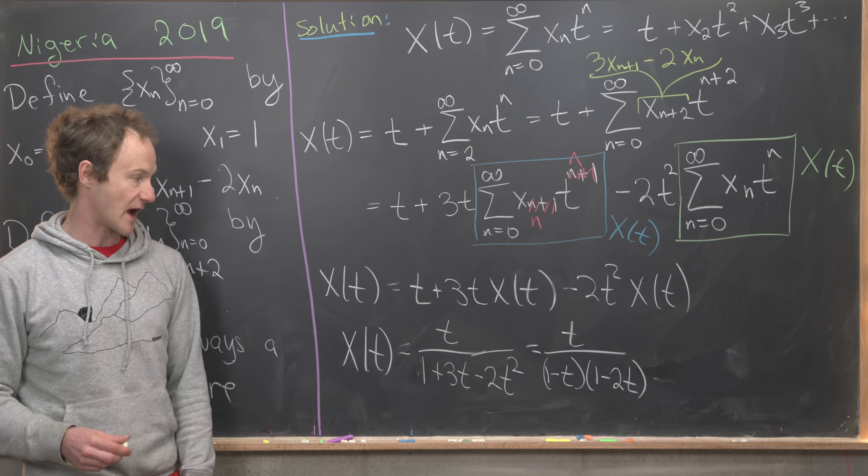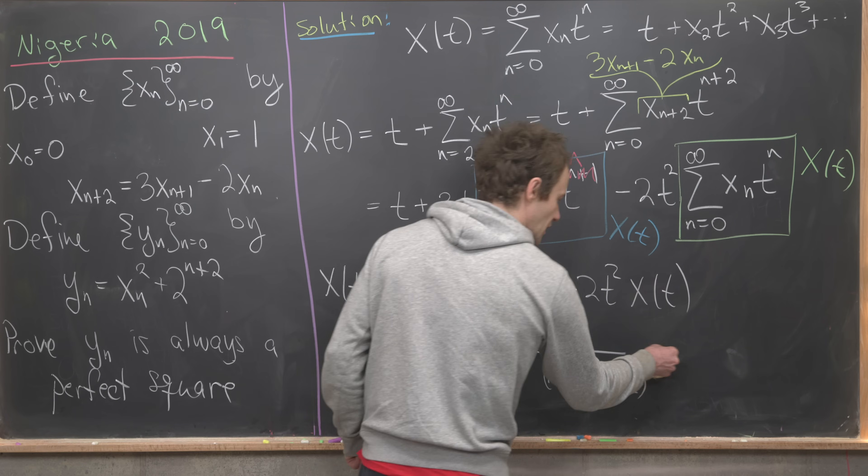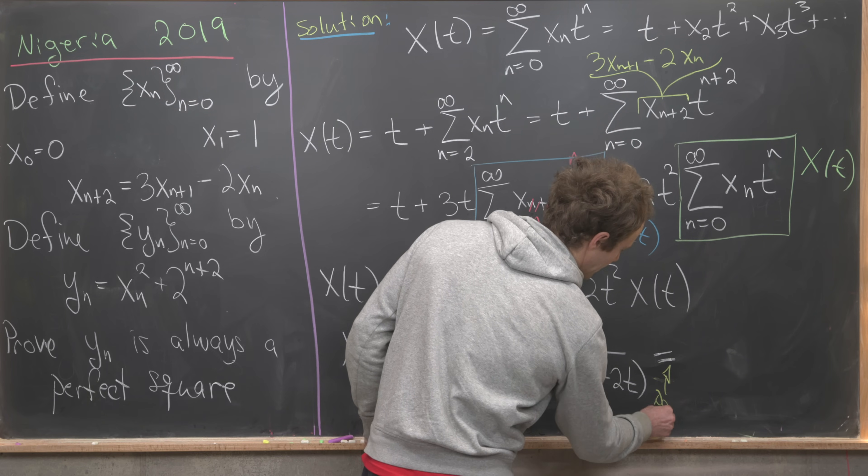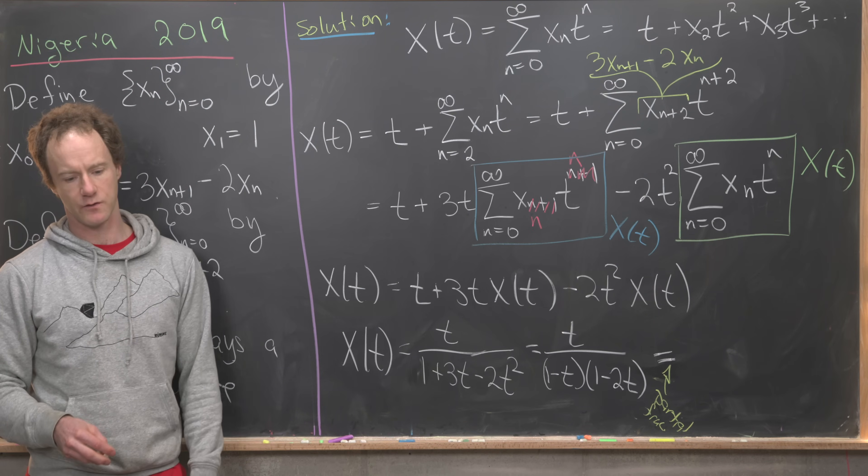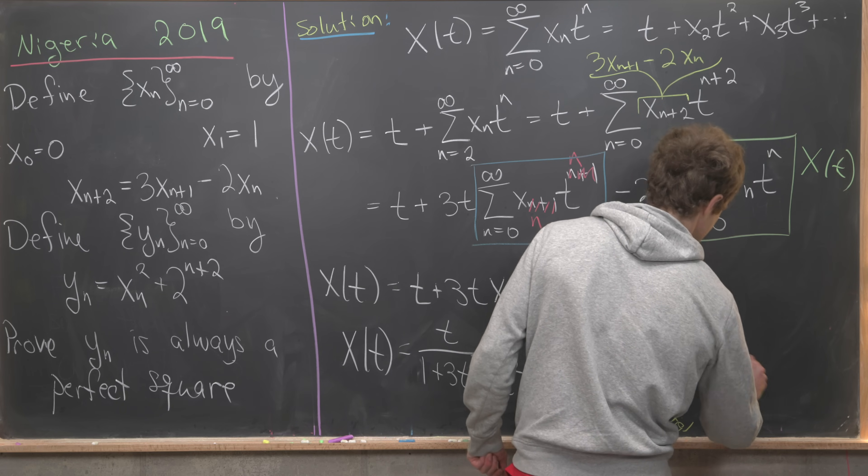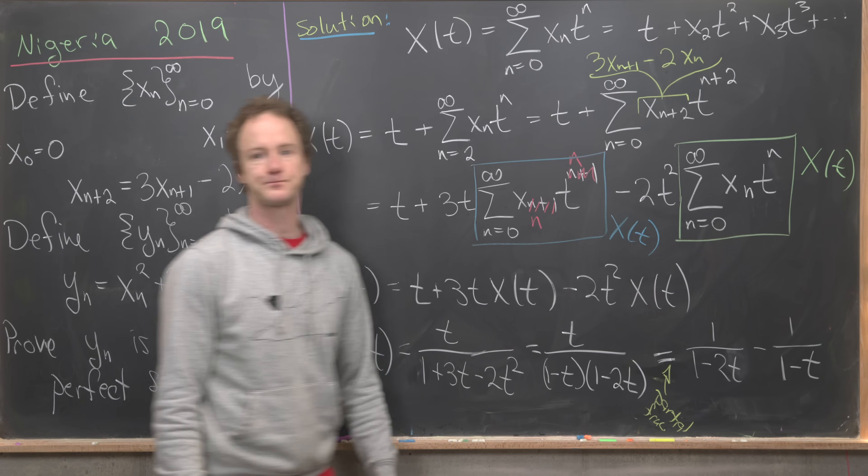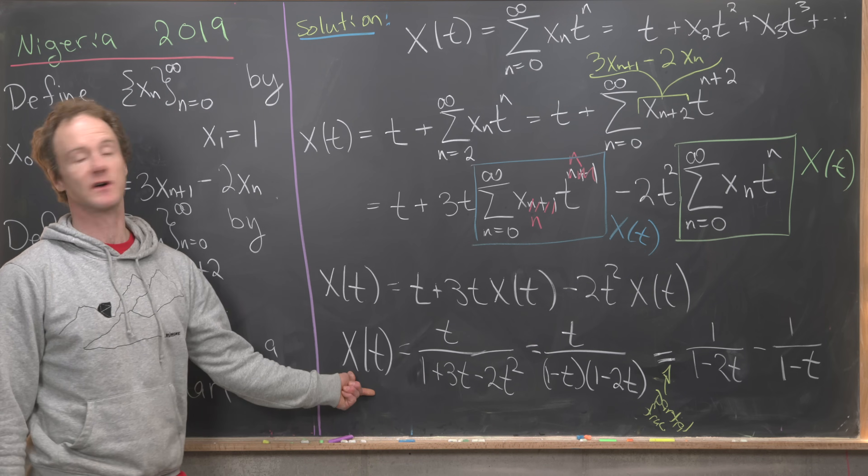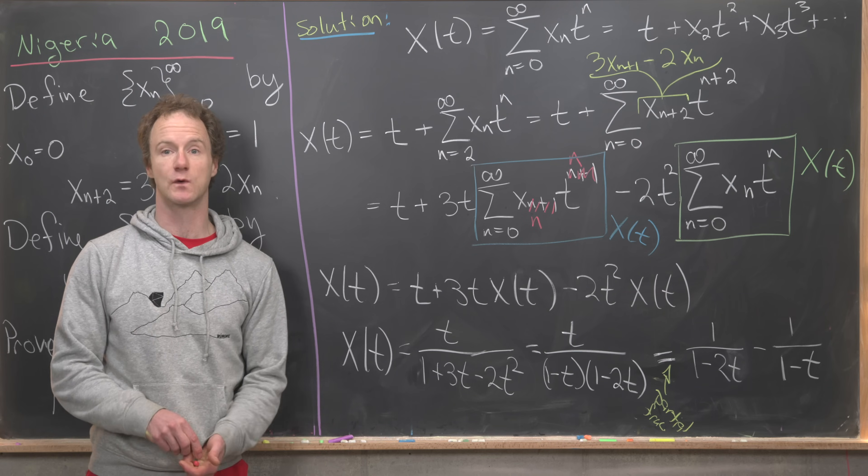Next up we'll use a partial fraction decomposition to break this into two parts. I won't do all the details of this. There are a bunch of videos on YouTube where partial fractions are explored, so if you need to review that I'll let you look at those. Suffice it to say we get 1 over 1 minus 2t minus 1 over 1 minus t. So that means we've got this rational function form of our generating function.